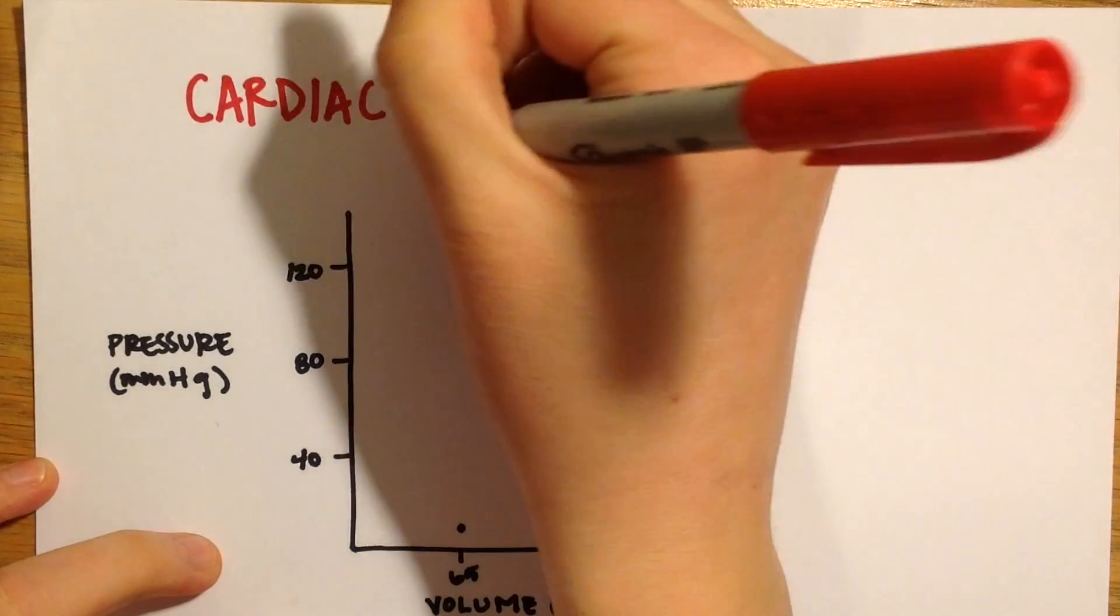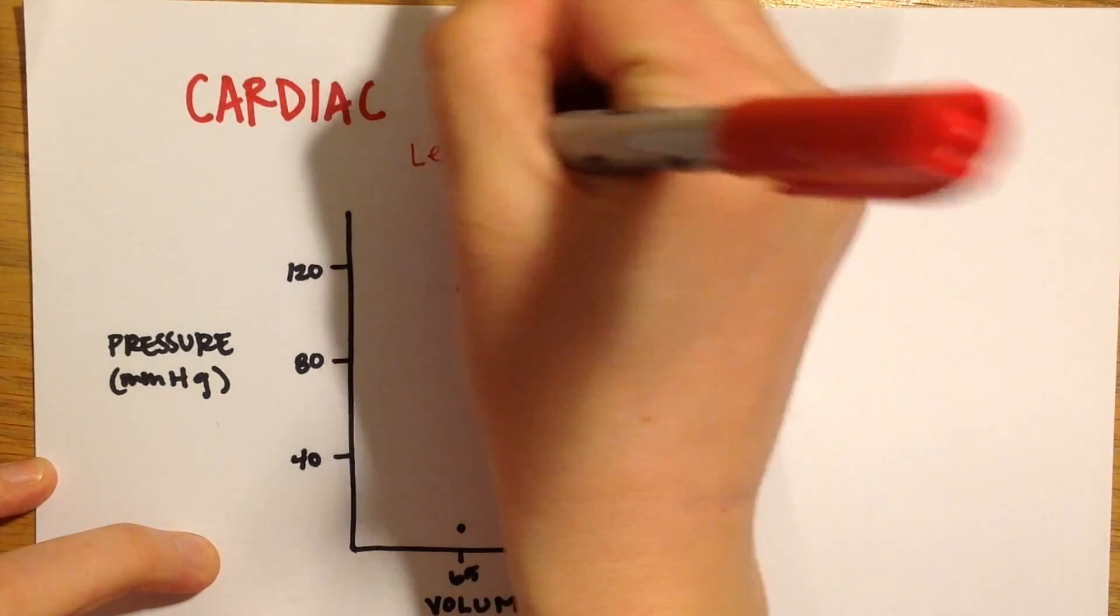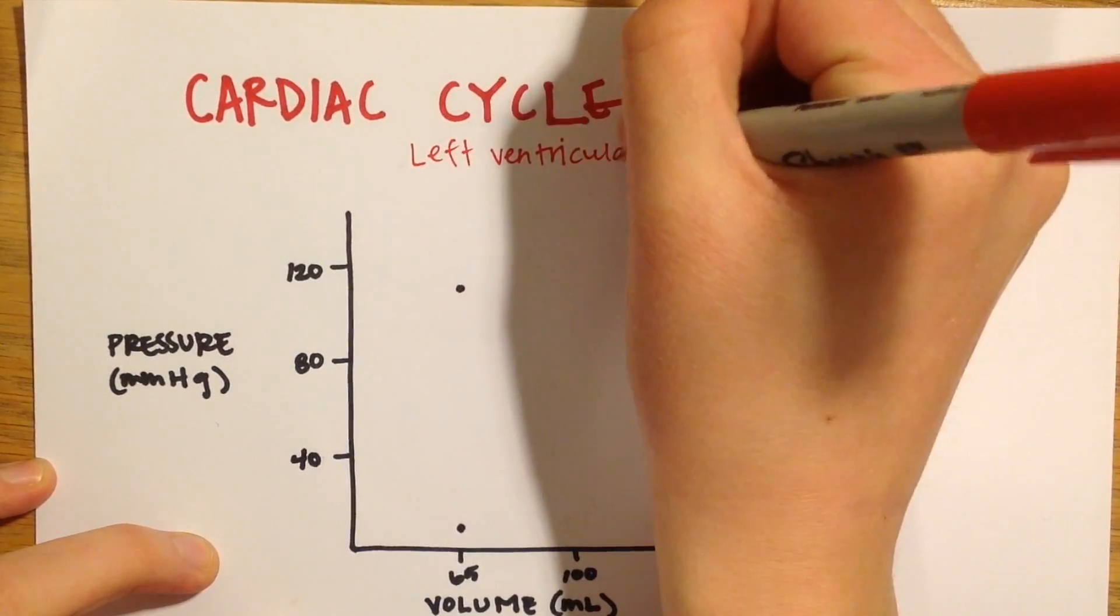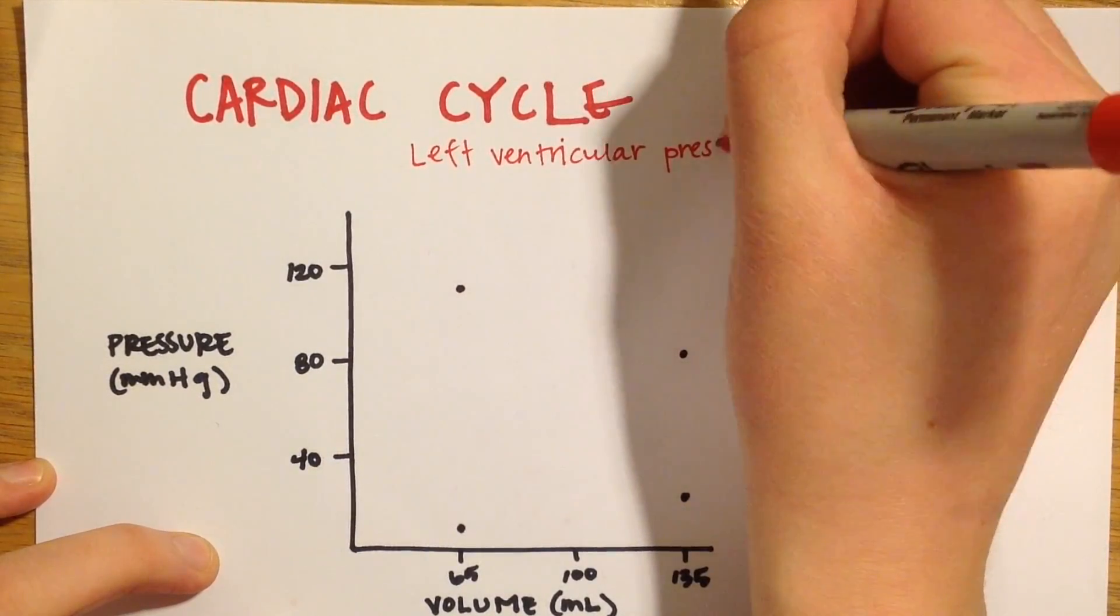We are going to start this video by going through the volume and pressure changes that occur in the left ventricle during one cardiac cycle. As we talk through these changes, I will graph out the comparison on this graph.